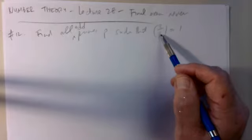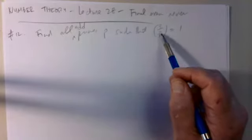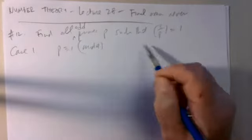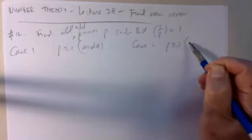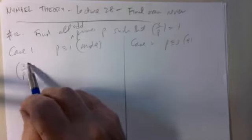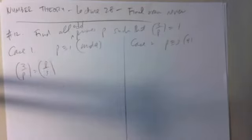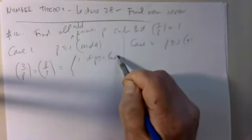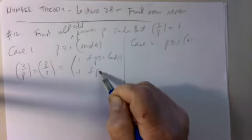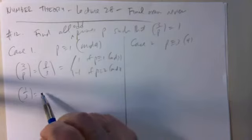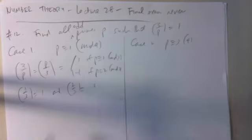Since 3 is congruent to 3 mod 4, if you want to apply quadratic reciprocity there are two cases depending on whether p is congruent to 1 mod 4 or 3 mod 4. Case 1: p is congruent to 1 mod 4. Case 2: p is congruent to 3 mod 4. If p is 1 mod 4, then (3/p) is the same as (p/3), which is 1 if p ≡ 1 mod 3, and −1 if p ≡ 2 mod 3, because 1 is a quadratic residue mod 3 and 2 is not.